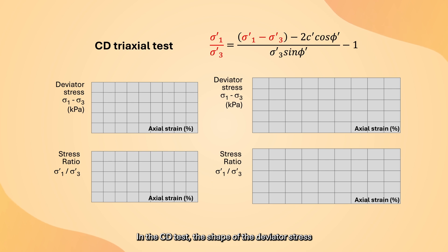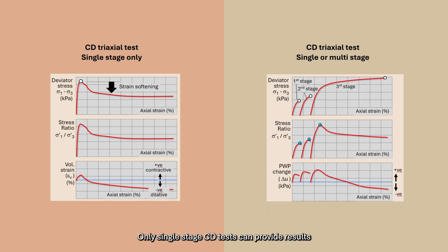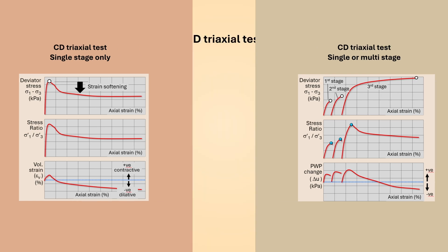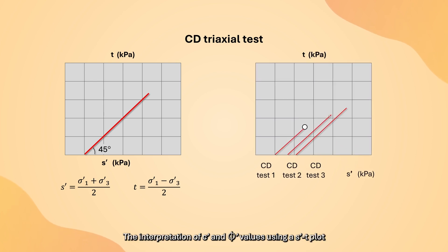In the CD test, the shape of the deviator stress versus axial strain curve is the same as that of the effective principal stress ratio versus axial strain curve. Therefore, the use of MDS as the failure criterion would yield the same shear strength parameters as the use of MSR. Only single-stage CD test can provide results for more meaningful determination of a soil's shear strength parameters. The stress path of CD test in ST plane is always a straight line. The interpretation of C' and φ' values using ST plot is similar to the CU test.